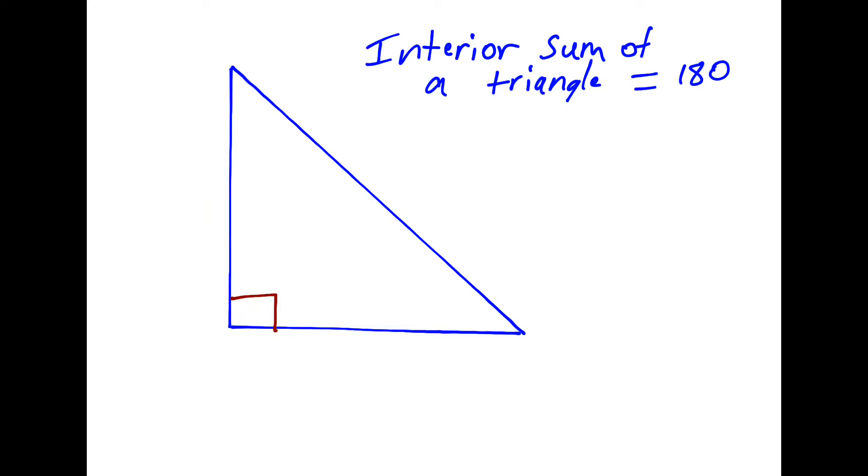We also did quite a few problems where we had to recognize that the interior sum of a triangle is 180. Which means if we know one angle, we can actually take 90 minus to figure out the other. This works because 90 is over here, so it's really like 180 minus 90, and we can kind of skip that step.